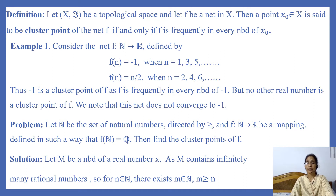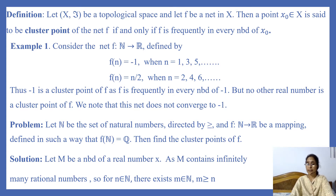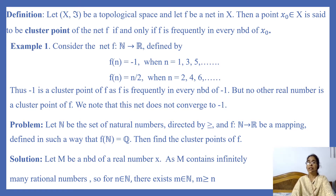Let us consider an example. Suppose f is a mapping from the set N of natural numbers to the set of real numbers. Since N is a directed set directed by the usual order, f is a net in R. Suppose f is defined as f(n) = -1 when n is an odd natural number, and f(n) = n/2 when n is an even natural number.